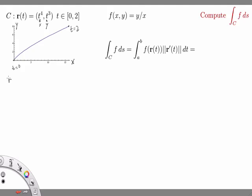We need to know r prime of t. We can compute it using these formulas and we get 4 times t cubed and 3 times t squared. The derivative of r gives me a tangent vector to the curve. r is the vector that points to the curve, and r prime gives me tangent vectors.